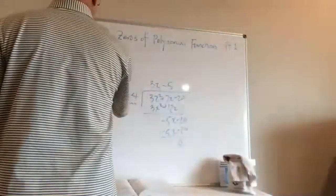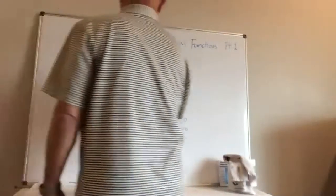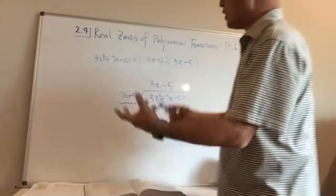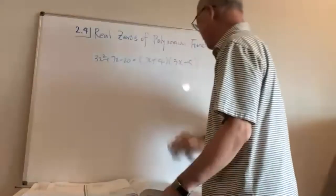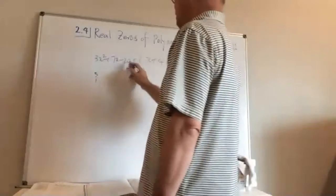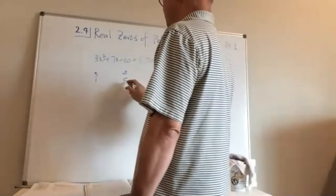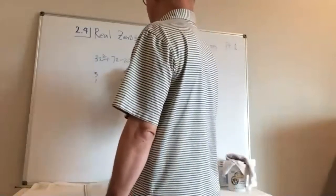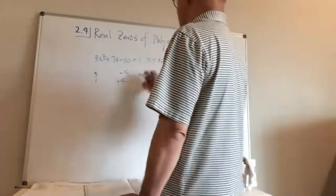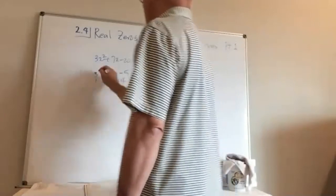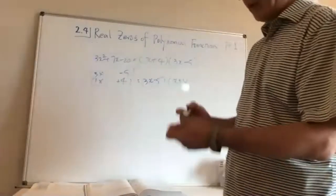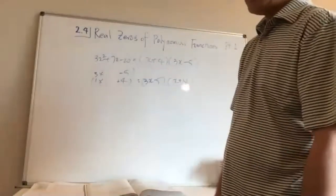So 3x² + 7x - 20 = (x + 4)(3x - 5). This is exactly what you're doing when you factor normally — you find two numbers that work, like 12 and -5 from 3 × (-20), to split the middle term and factor. You get the same result either way.